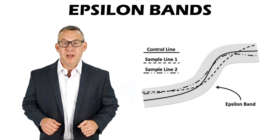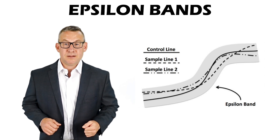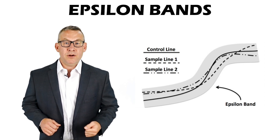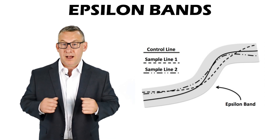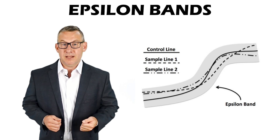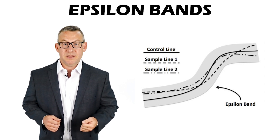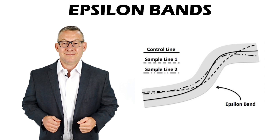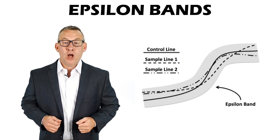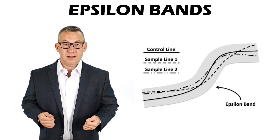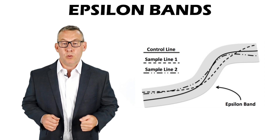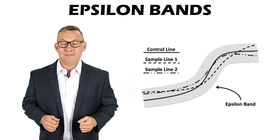Epsilon bands are an area around a line that has a high probability of containing the true line segments. Larger epsilon bands are associated with lower quality data.